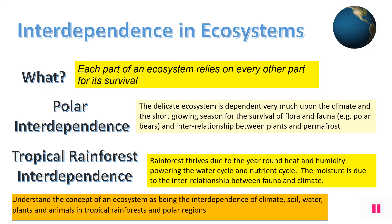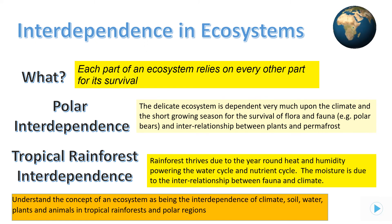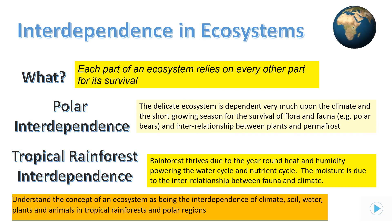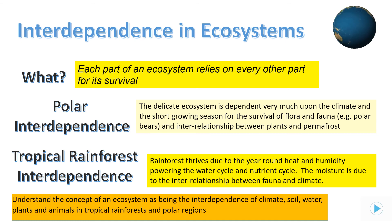Here is a brief overview of interdependence in ecosystems. Each part of the ecosystem relies on every other part for its survival, with relationships between the biotic and abiotic parts. The polar ecosystem is very fragile, where small changes to seasons can affect everything, especially the interrelationship between flora and the permafrost. The rainforest has most of the living biomass on earth, where year-round warmth drives the nutrient and water cycles. However, these relationships are under threat due to humans. Pause to review your understanding of interdependence in ecosystems.